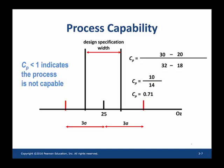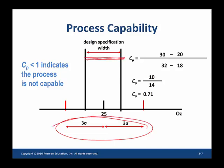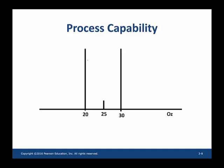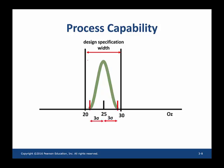Since CP is less than one, the process is not capable. When the six sigma distance is wider than the design specification width, the process is not capable. To make the process capable, we drive out variability by reducing sigma so that the extreme points — three standard deviations from the mean — fall within the design specification limits. This is the basic idea of the six sigma philosophy. When sigma is reduced sufficiently, CP will be higher than one.